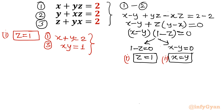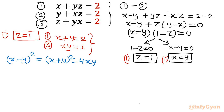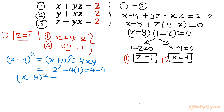I have to find the value of x and y. I am going to use the algebraic identity: x minus y whole square equals x plus y whole square minus 4xy. Putting in the values: 2 squared minus 4 times 1, which gives 4 minus 4. So x minus y whole square is equal to 0, and the conclusion is x must be equal to y.